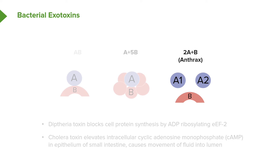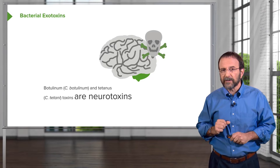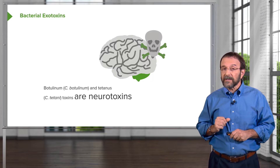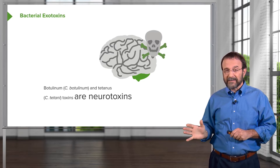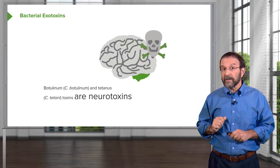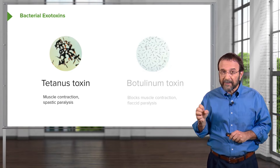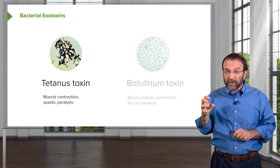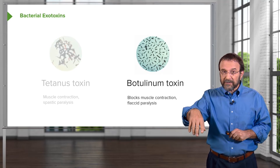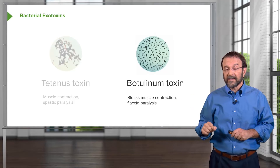Two well-known toxins are botulinum toxin, produced by Clostridium botulinum, and tetanus toxin, produced by Clostridium tetani. These are neurotoxins. They are elaborated by the bacteria at different sites, make their way through the circulatory and lymph systems to the brain, where they cause their effects. Tetanus toxin causes muscles to contract uncontrollably, producing spastic paralysis. Botulinum toxin, on the other hand, blocks muscle contractions so the muscles become flaccid — this is called flaccid paralysis. So these two toxins have very different effects on the central nervous system.